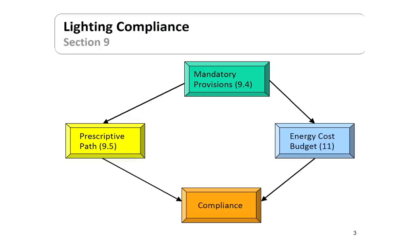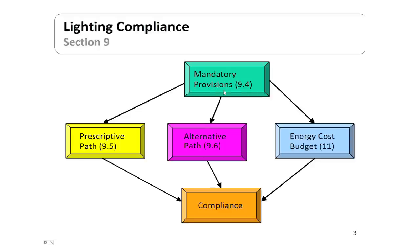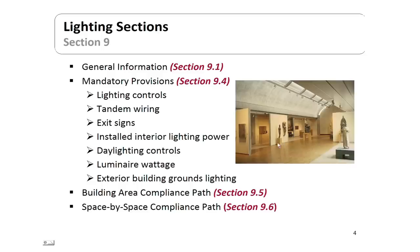The lighting compliance form initially looks pretty much like the rest, with a little change. We go through the mandatory provisions and then on to prescriptive and to compliance. But there's another alternative path in the middle — the building area method, and 9.6 is the space by space method. Failing to comply in those, we can use the energy cost budget as always. We're going to look at general information, some mandatory provisions, and then these two alternative paths.